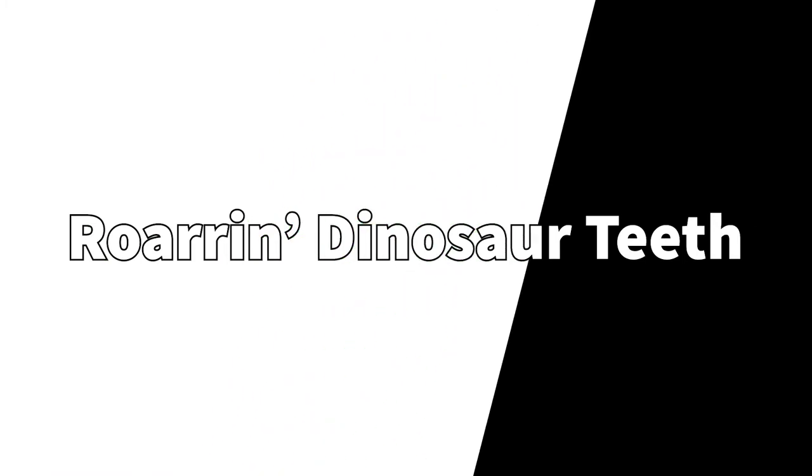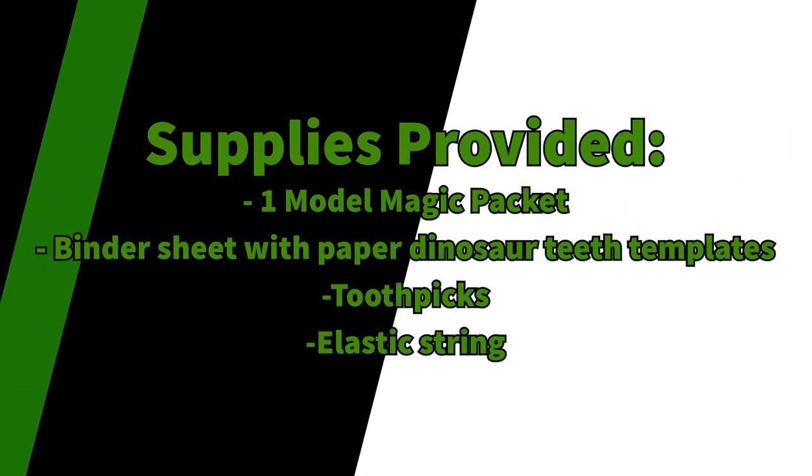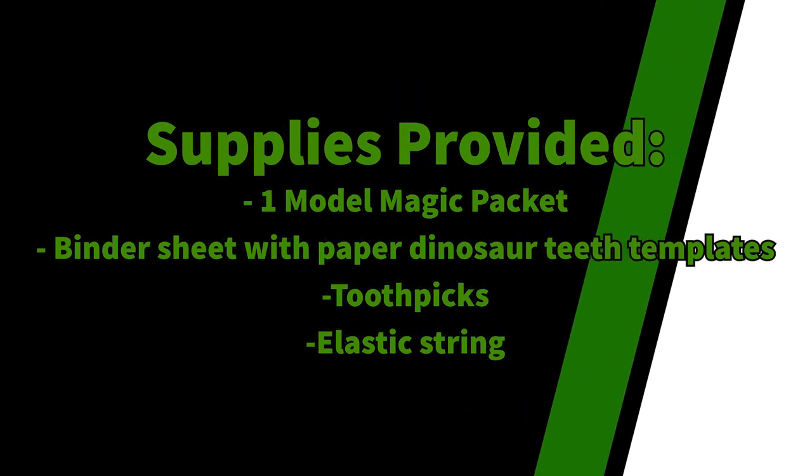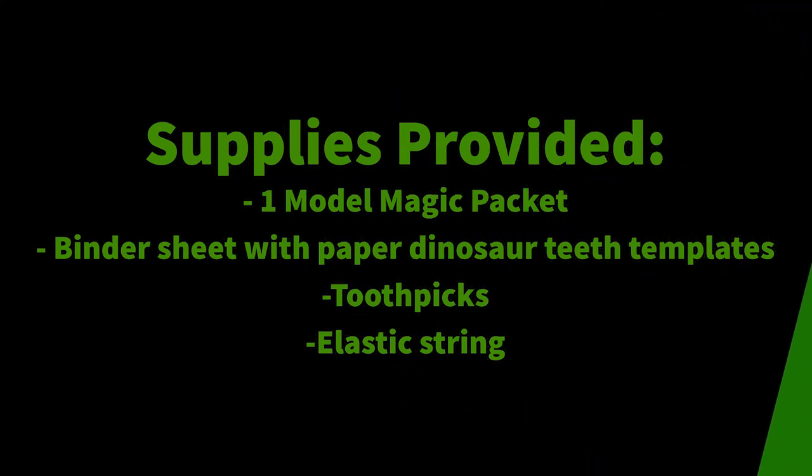With our next activity, we are going to be recreating dinosaur teeth. Supplies needed for this activity will be one model magic pack, the plastic binder sheet with the dinosaur teeth template showing, toothpicks, and elastic string.